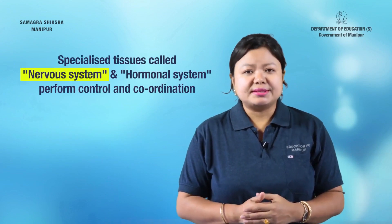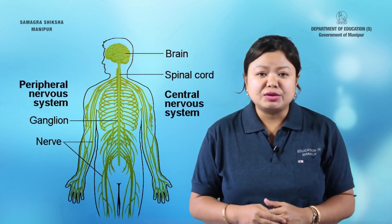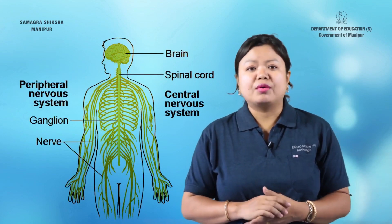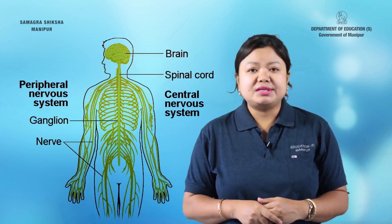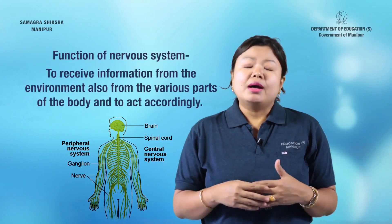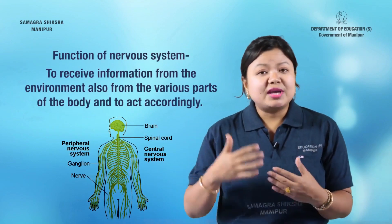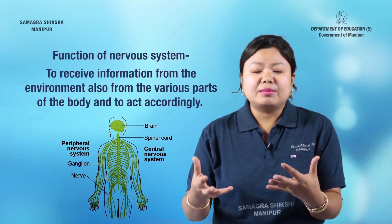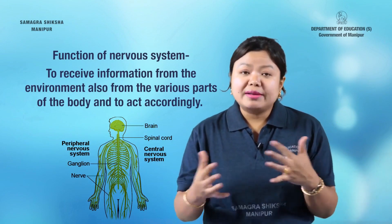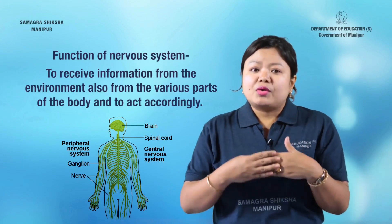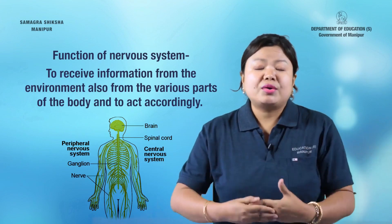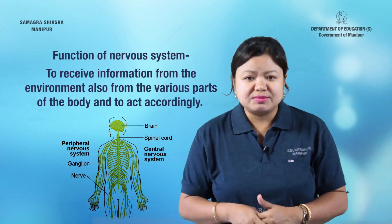Here is the nervous system. There is a nervous system — brain, spinal cord, and a huge network of nerves. The nervous system receives information from the environment and from various parts of the body.